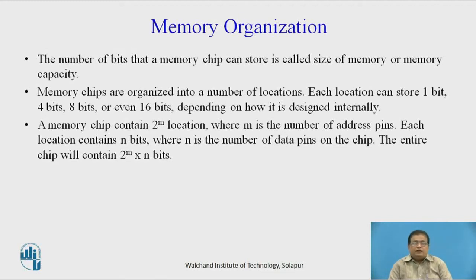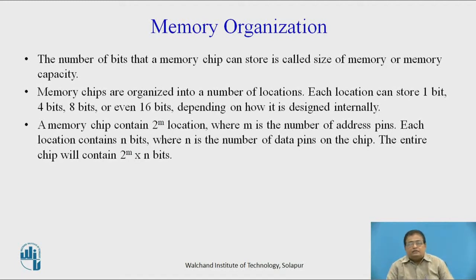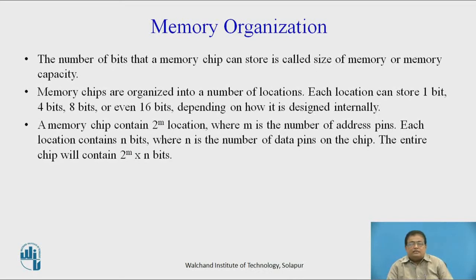First we will see the memory organization. The number of bits that a memory chip can store is called the size of memory or memory capacity. Memory chips are organized into a number of locations. Each location can store 1-bit, 4-bit, 8-bits, or even 16-bits depending on how it is designed internally. A memory chip contains 2 raised to m locations, where m is the number of address pins. Each location contains n bits, where n is the number of data pins on the chip. So the entire chip will contain 2 raised to m multiplied by n bits.